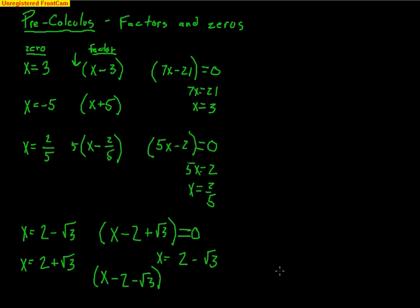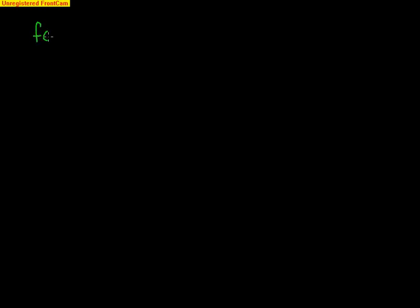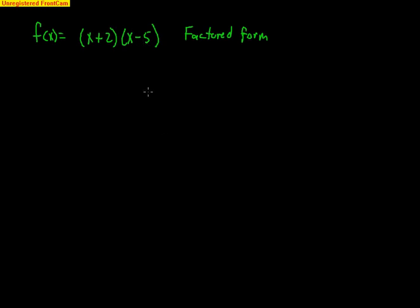Now let's talk about a function that has the factors x plus 2 and x minus 5. This is what we call factored form — it means we have linear factors with x to the first. From looking at this, the zeros would be x equals negative 2, because negative 2 plus 2 is 0, and x equals 5, because 5 minus 5 is 0. Let's go ahead and multiply this out and see what we get.